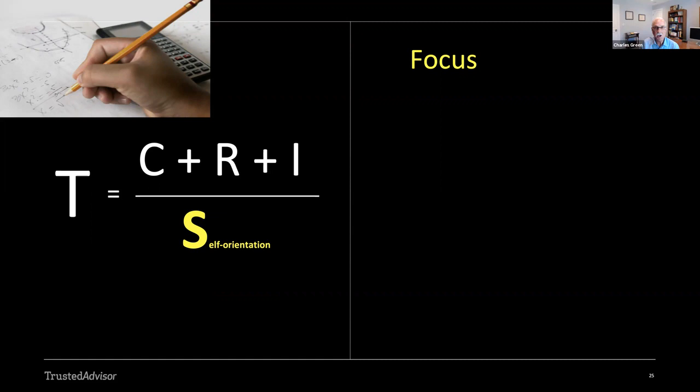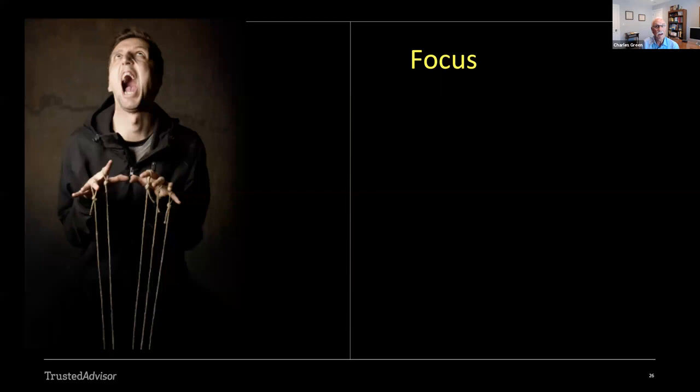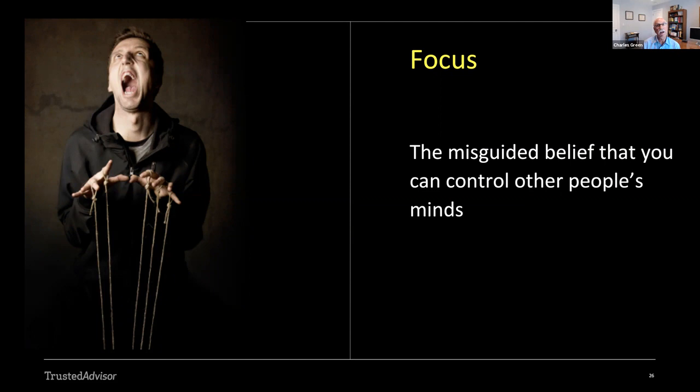Those of you that have been in this trust series have heard about the trust equation. The denominator you recall is self-orientation, which has to do with where your focus is and your motives and your attention, and whether you're focused on the other person or neurotically obsessed with yourself. Well the notion of closing fits right into this, because our focus is frankly on manipulating and controlling the other person and getting them to do what we want them to do, which is sign on the bottom line in our time frame. And I would argue that there's a misguided belief that we can control other people's minds. We are not that good at controlling other people's minds. All of us on the buyer side know pretty well when we're being manipulated and when somebody's using us as a means to their own ends.